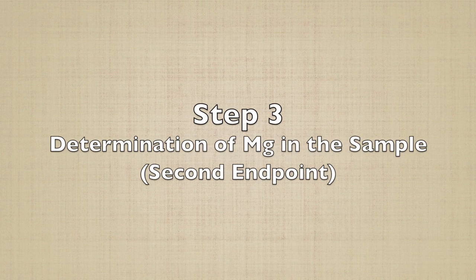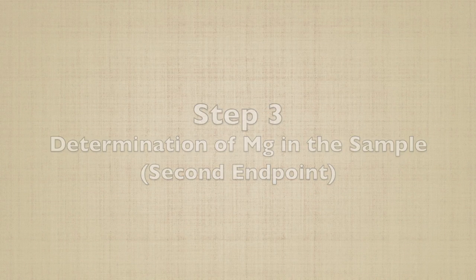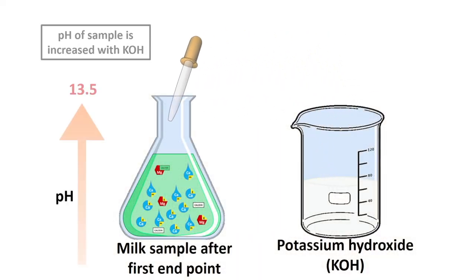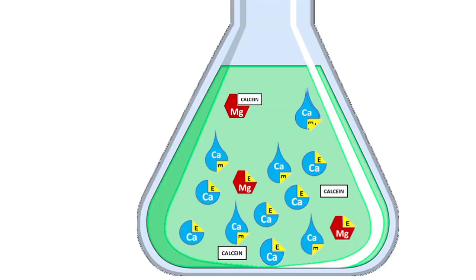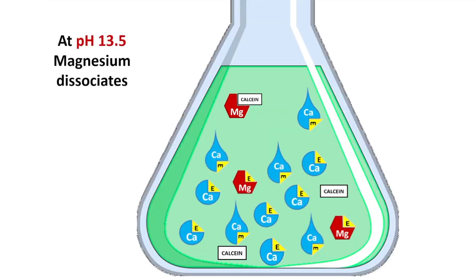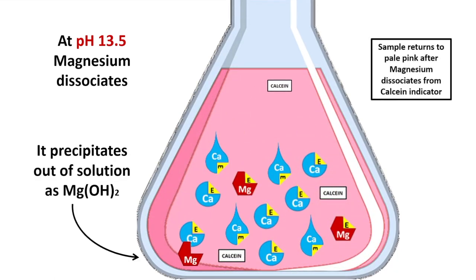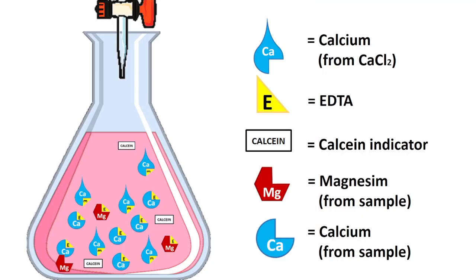The next step is to determine how much magnesium is in the sample. By adding an additional amount of potassium hydroxide to increase the pH, the small amount of magnesium bound to the calcium indicator is now dissociated from the indicator and precipitated as magnesium hydroxide. Since the amount is very small, you do not need to take that into account in the calculation. Now, since all calcium indicator is free, the solution will again turn pink. Perform the back titration with calcium chloride.